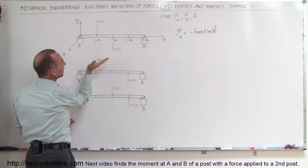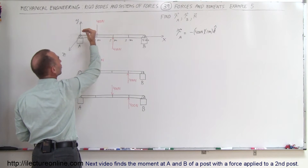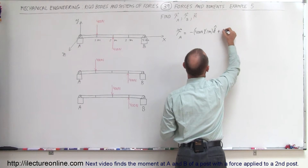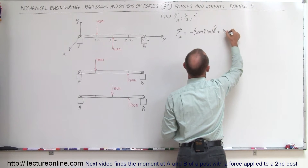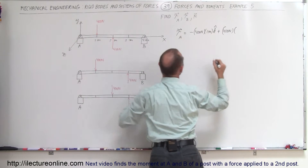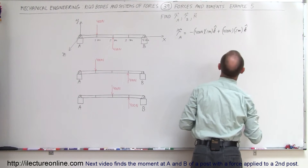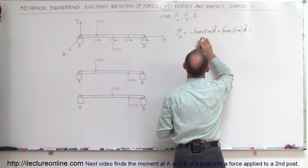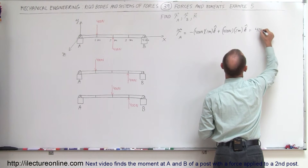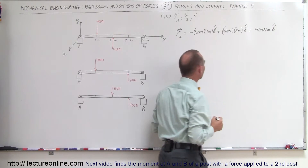On the other hand, this force would cause the beam to rotate in a counterclockwise direction, giving a positive Z direction for the torque. So it would be plus 400 Newtons times the distance of two meters from point A. So we have minus 400 Newton-meters plus 800 Newton-meters, which gives us a total of plus 400 Newton-meters in the Z direction.